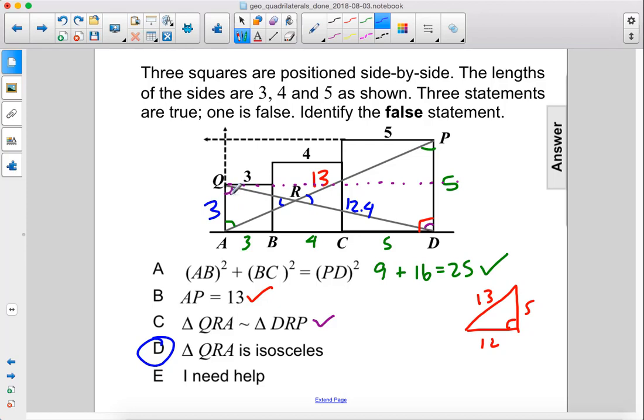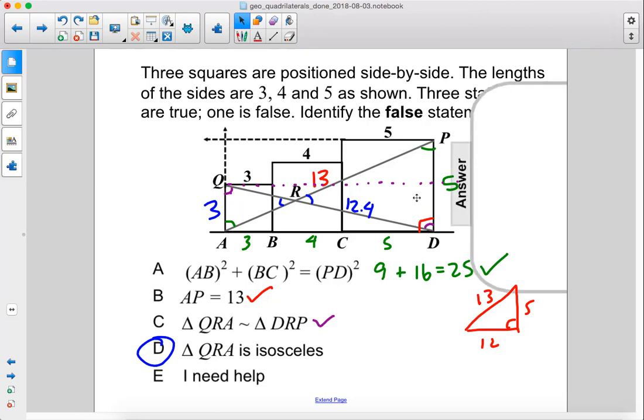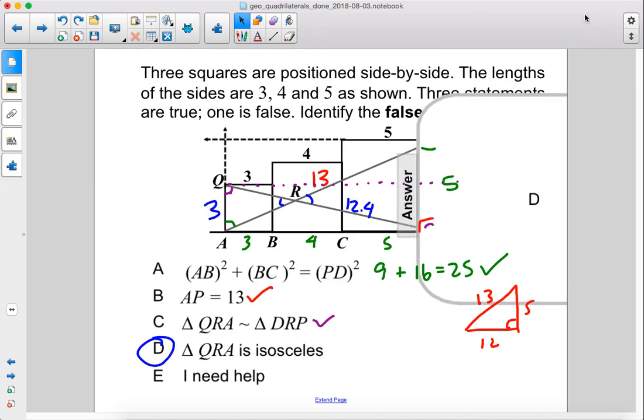You can also see that this angle here is not necessarily congruent to this angle here. And that would be required for this to be an isosceles triangle. So since these two lengths are not equal and these two angles are not congruent, triangle QRA is not isosceles. The answer is D.